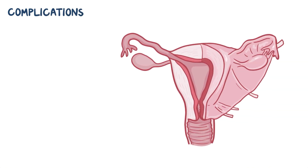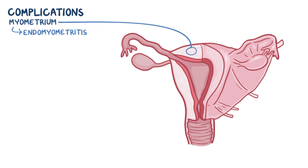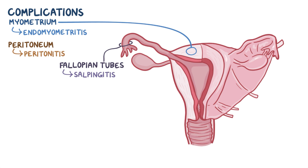Endometritis has a number of complications, including the spread of bacterial infection from the endometrium to the underlying myometrium, where it's called endomyometritis, or to the peritoneum, causing peritonitis. The infection can also spread to the fallopian tubes, causing salpingitis, or to the ovaries, causing oophoritis.